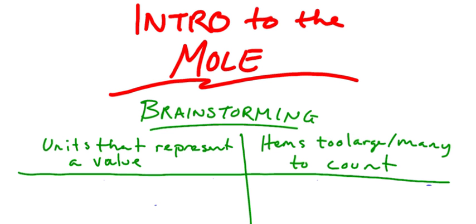So if we were brainstorming, the first two things I would have asked you is write down some units that represent a value, and then the second thing I would have asked is items too large or too many to count. For example, what do I mean by units that represent a value? Well, we know right now that like a dozen equals 12, right? Whenever I say a dozen, it always equals 12, no matter what.